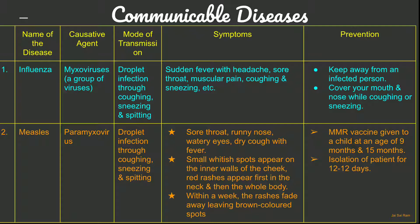Preventive measures for measles include giving the MMR vaccine to a child between 9 to 15 months of age, which can prevent measles. If a person gets measles, they should be kept isolated from others for 12 to 15 days.